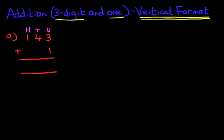First things first, check the sign. I know we're doing addition, but I always like to check the sign, because you will face very different ones when you are doing tests and in the classroom. And where do we start? We always start on the right-hand side, what I'm circling in yellow — the units. Three plus one. What is three plus one? The answer is four.